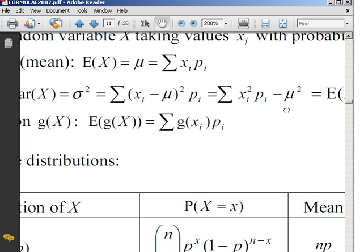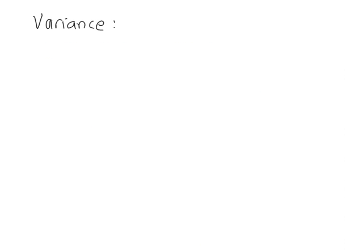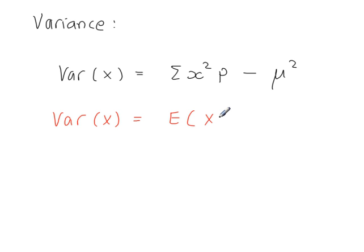But there are other alternative forms that will give you the same variance, and this is a commonly used one here. The expected value of X squared minus the mean squared. So the variance of the discrete random variable X is equal to sigma X squared P minus the mean squared. An alternative form is the expected value of X squared minus the mean squared.